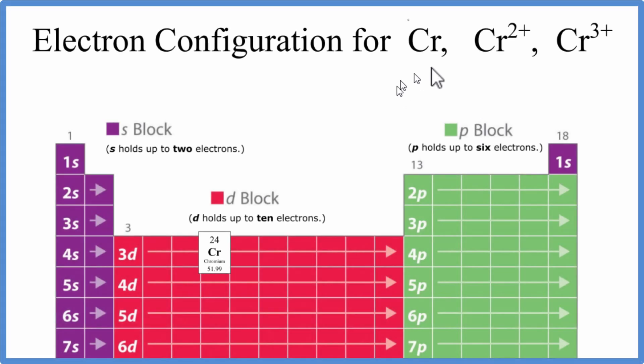In this video, we'll write the electron configuration for chromium and then also the Cr2+ and Cr3+ ions. Chromium is important because it's an exception to the rules that we follow to write electron configuration, so it's really one that you should know.